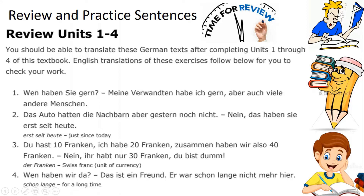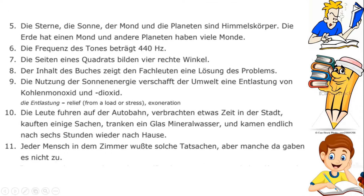'Nein, ich habe dreißig Franken. Du bist dumm.' The Franken in this case refers to Swiss francs, basically money. The fourth sentence: 'Wen haben wir da? Das ist dein Freund. Er war schon lange nicht mehr hier.' 'Schon lange' is 'for a long time.' The fifth sentence: 'Die Sterne, die Sonne, der Mond und die Planeten sind Himmelskörper. Die Erde hat einen Mond und andere Planeten haben viele Monde.'